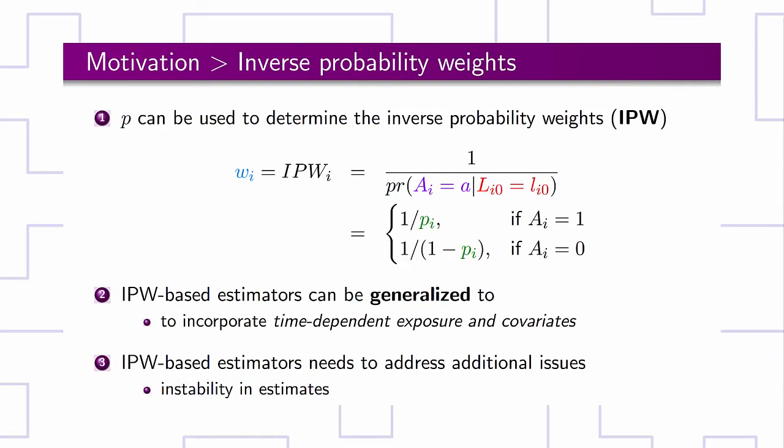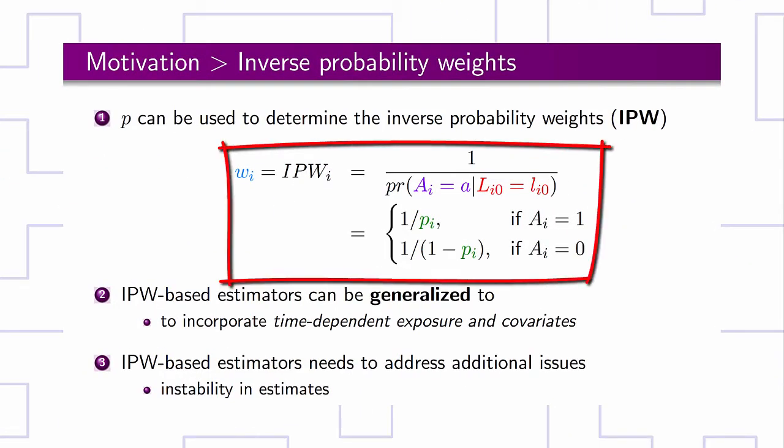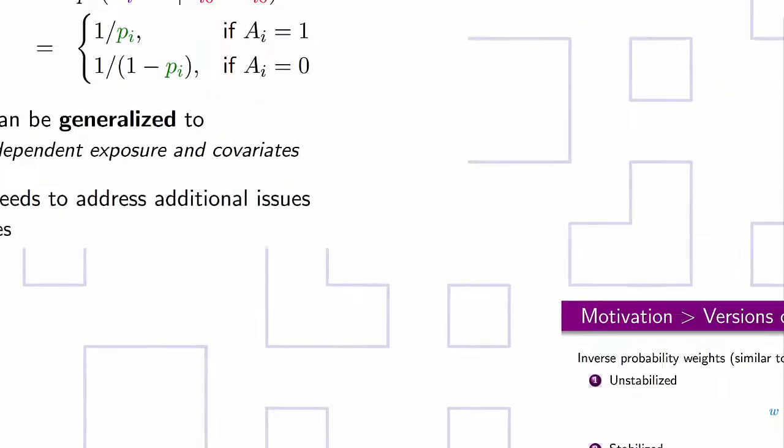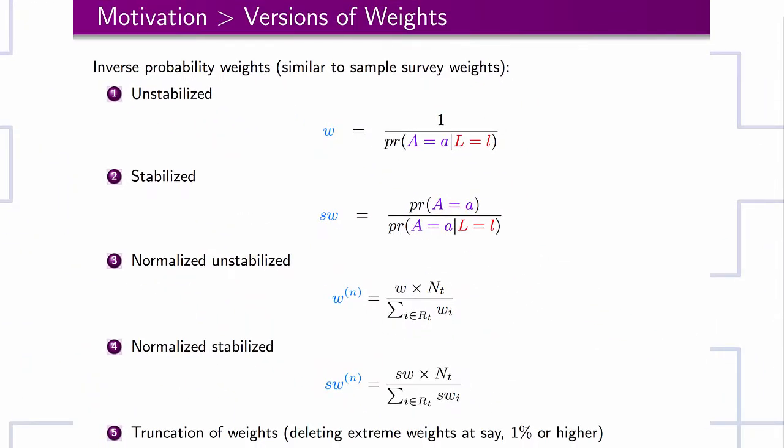Propensity score and inverse probability weights are functionally related. However, the nice feature of inverse probability weights is that these can be generalized to incorporate time dependent covariates. Sometimes, such estimators are unstable and standard errors are unreliable. Therefore, various versions of weights are introduced to gain stability. As in sample survey weights, these weights can be stabilized, normalized and truncated based on specified percentiles.